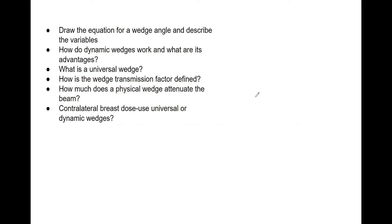First and foremost, know the wedge angle and know the variables. Theta is equal to 90 degrees minus phi over two — you have to know that equation. Theta is the angle through which an isodose curve is tilted at the central ray of the beam at a depth of 10 cm. That is what theta is — that is the wedge angle.